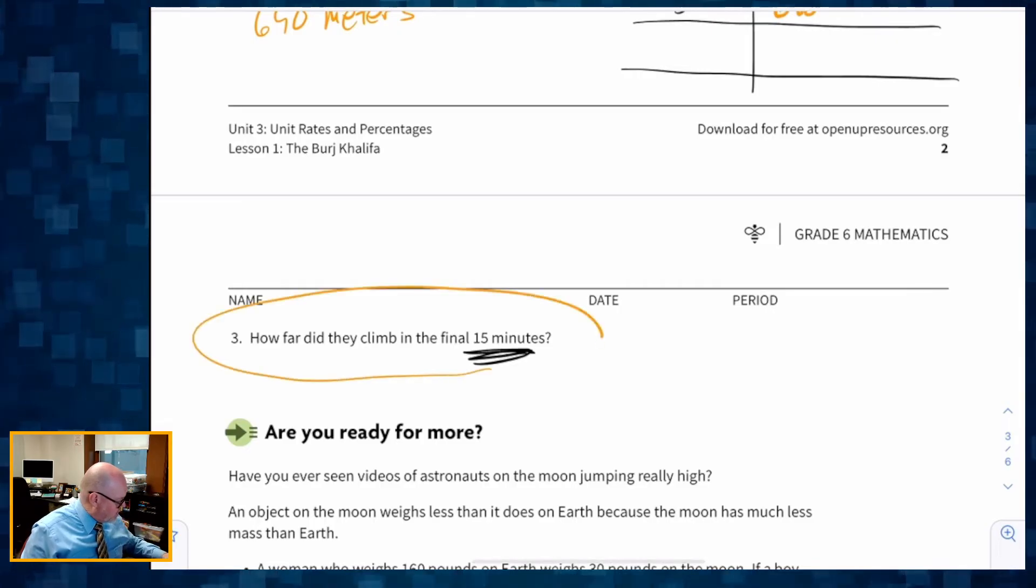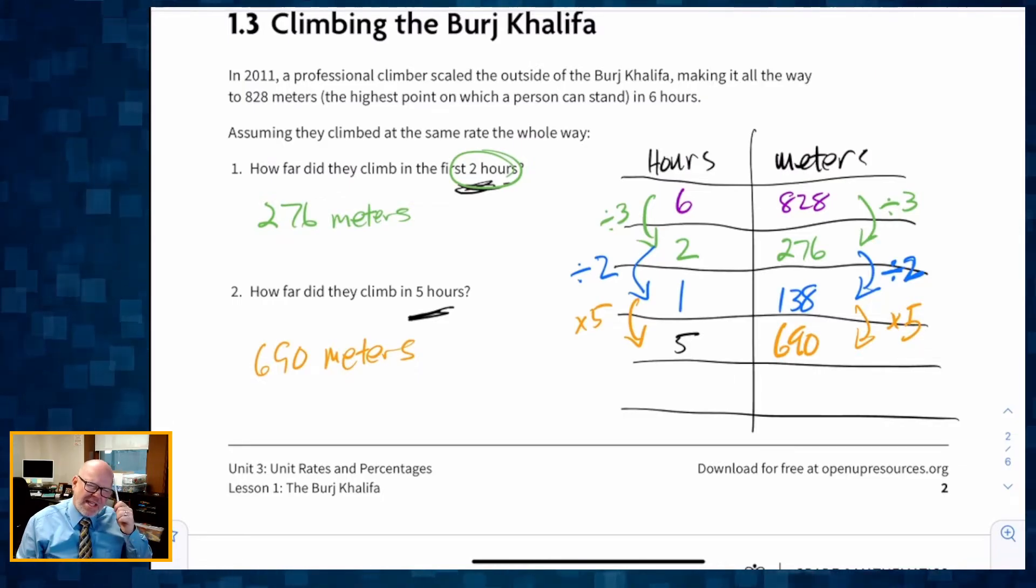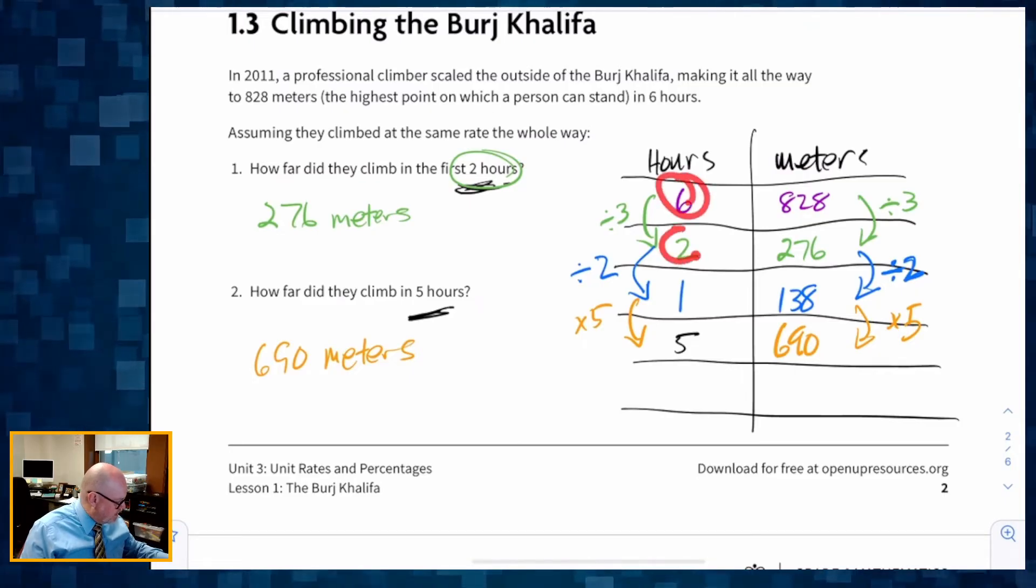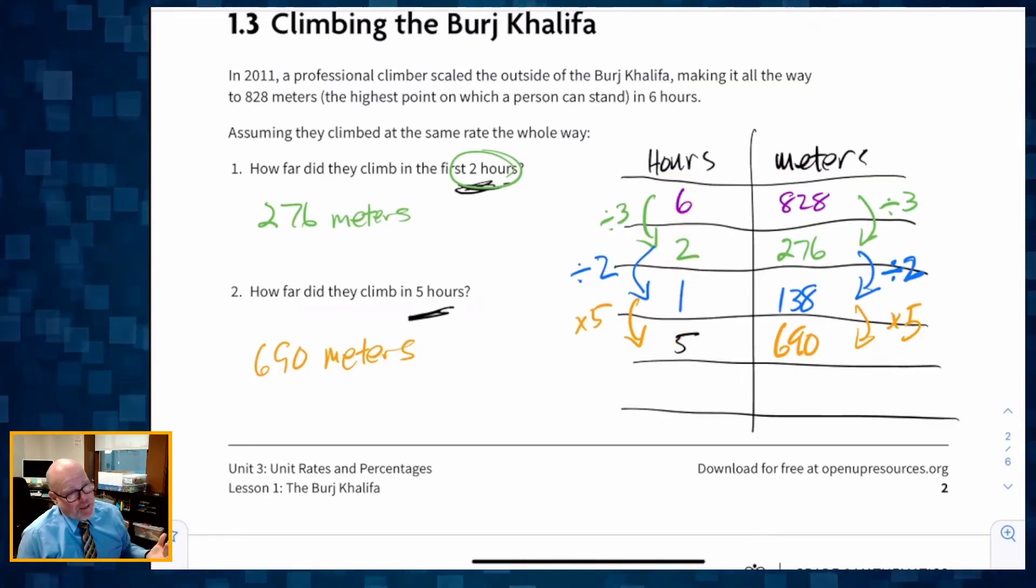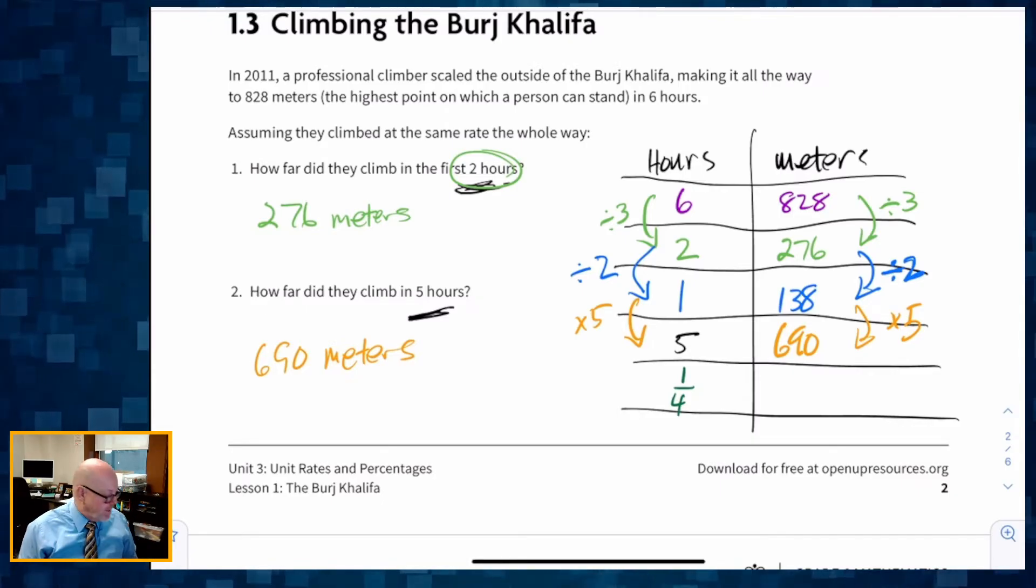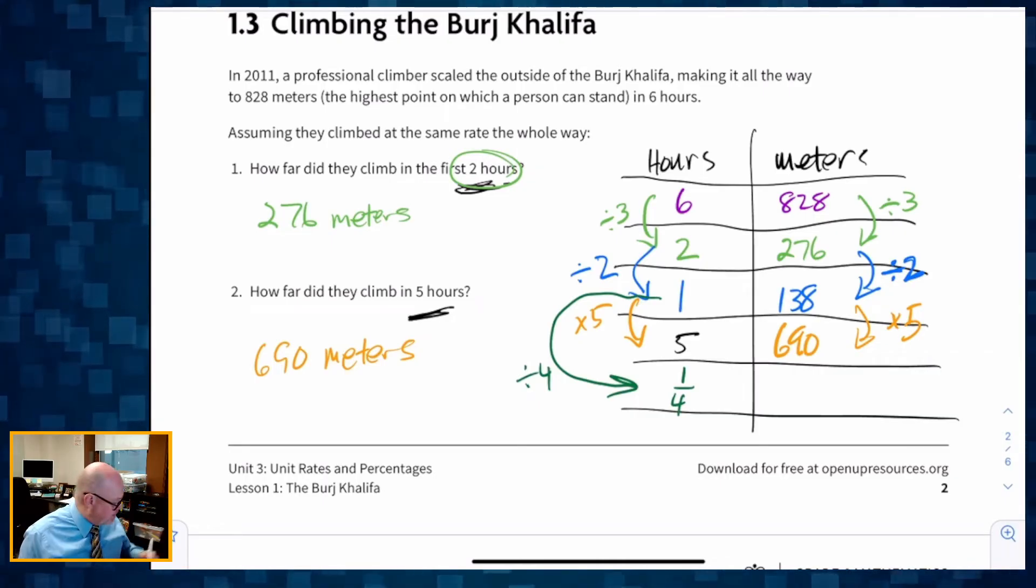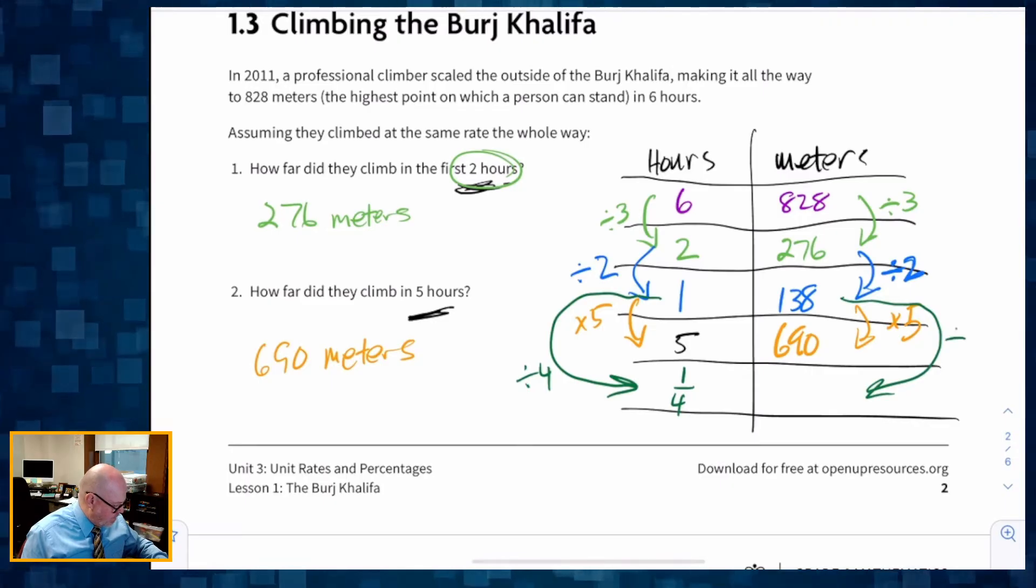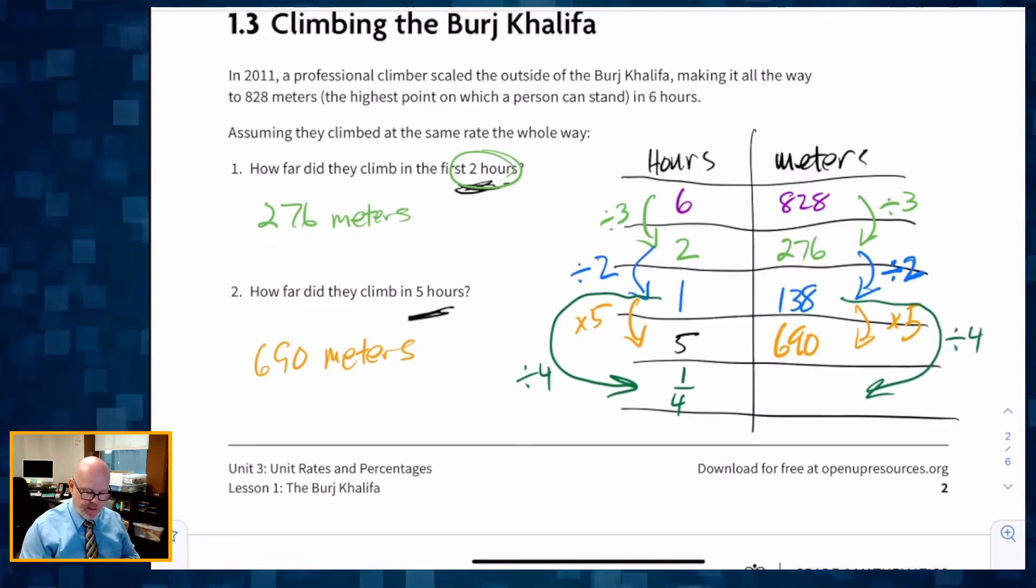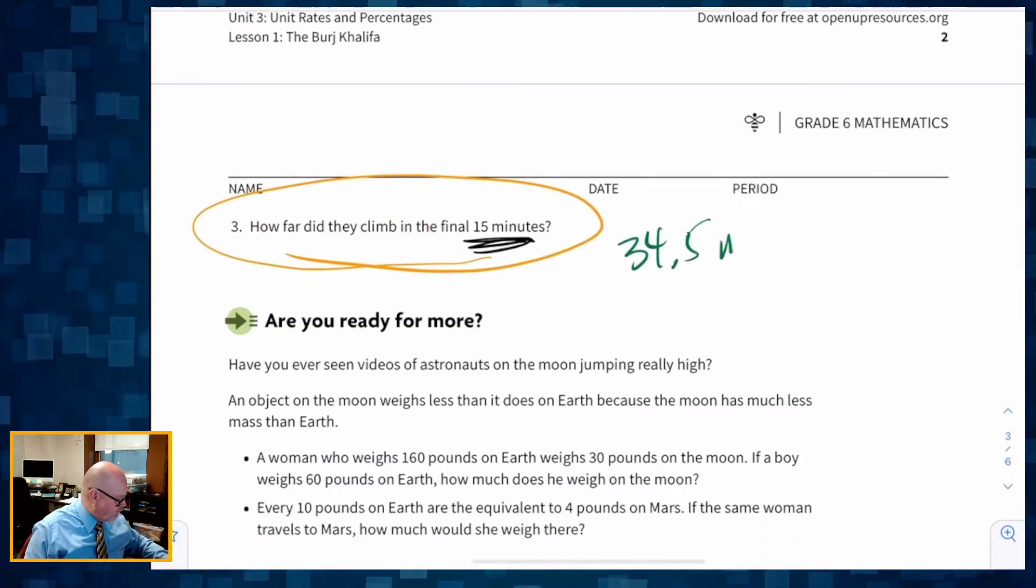Now this last question says, how far did they climb in the final 15 minutes? So I need to know, how does any of these relate to 15 minutes? I'm going to think of 15 minutes as one quarter of an hour. And so, since it's one quarter of an hour, all I have to do is take the one and divide by four, and that's going to give me a quarter of an hour, 15 minutes, which means I could take the 138 and divide by four. So 138 divide by four gives me 34 and a half meters. So 34 and a half meters.